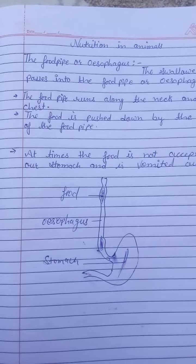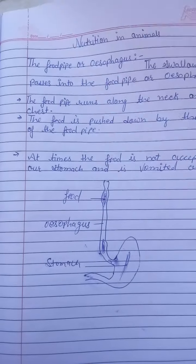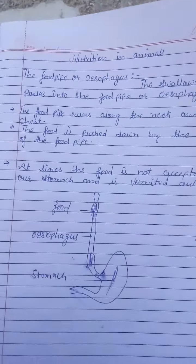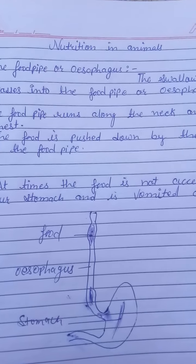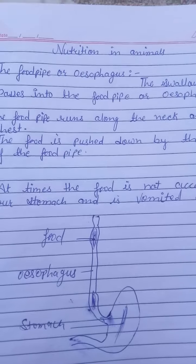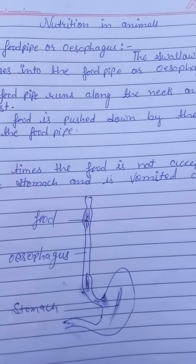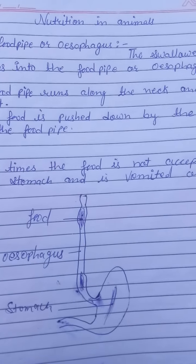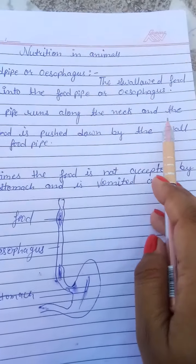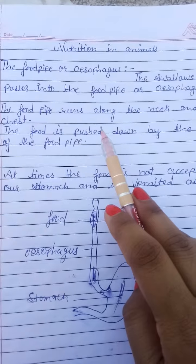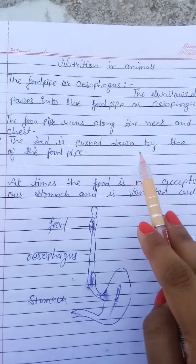The food pipe or esophagus: the swallowed food passes into the food pipe or esophagus. Firstly, we take food in our mouth and start digestion; the swallowed food then goes to the food pipe or esophagus. The food pipe runs along the neck and the chest, and food is pushed down by the wall of the food pipe.